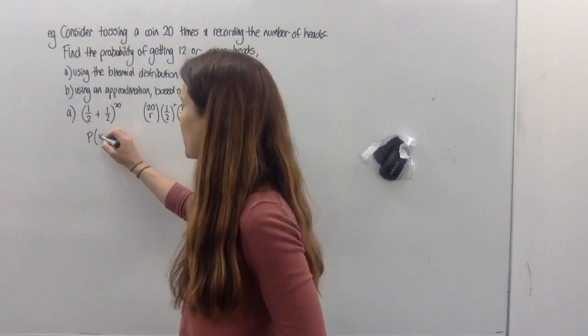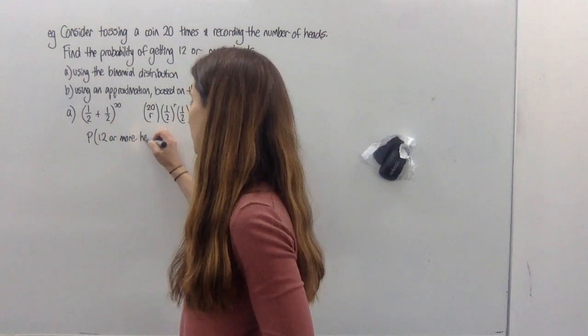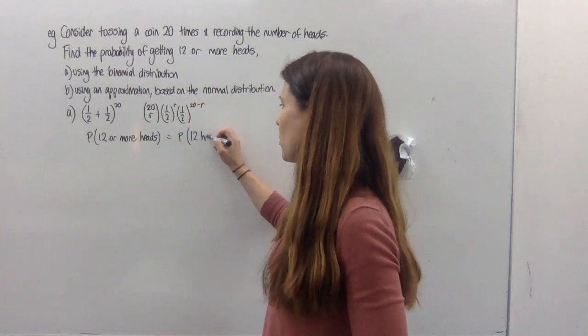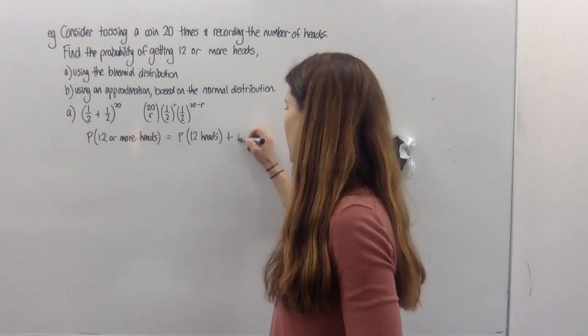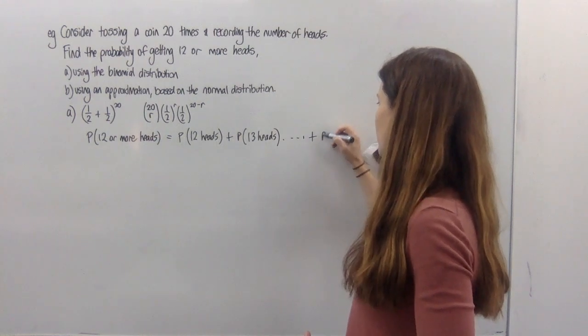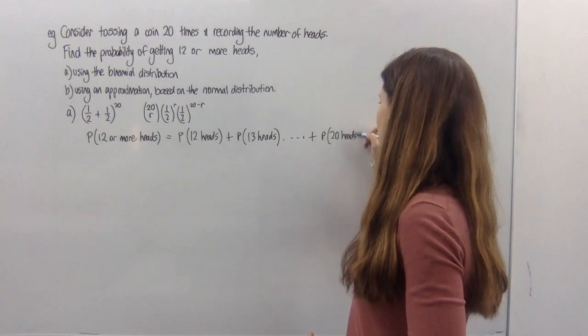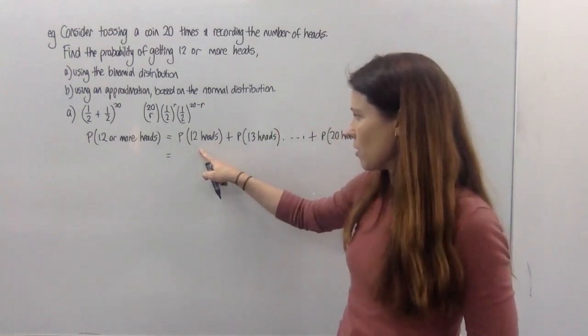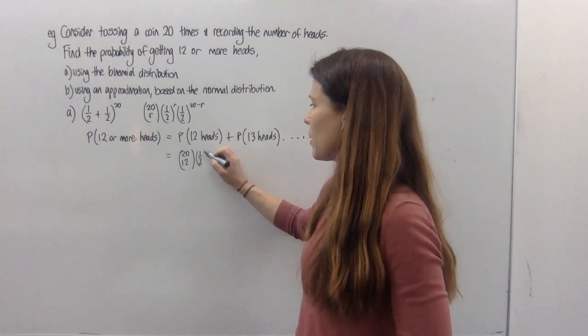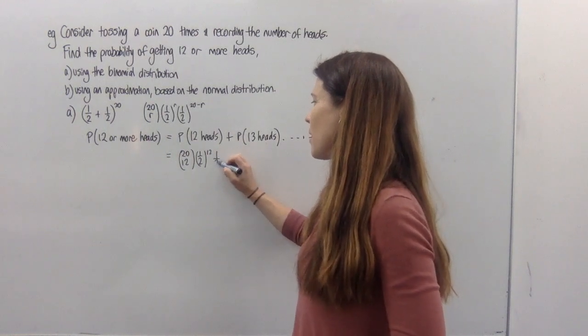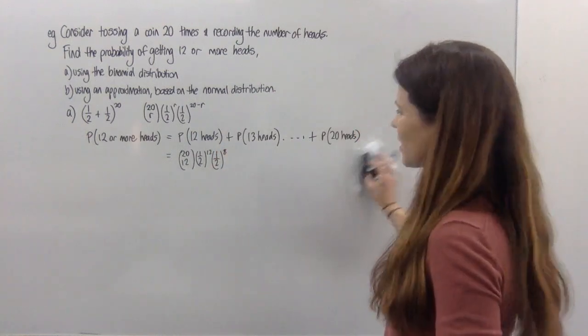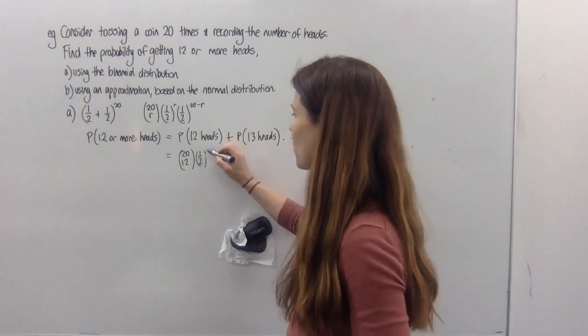So we want the probability of 12 or more heads. Now we'll need to add some things up here. That means we've got the probability of getting exactly 12 heads, plus the probability of 13 heads, etc, all the way up to the probability of all 20 heads, which of course is going to be quite unlikely. So for each term, for this one, we'd have 20 choose 12, we'd have a half to the power of 12, but we'd also have a half to the power of 8. Can you see what's happening there? We can add the powers together and say, actually, let's just cut to the chase and say it's half to the power of 20.